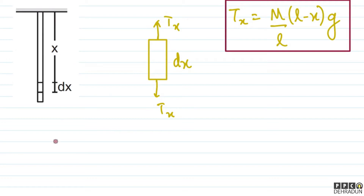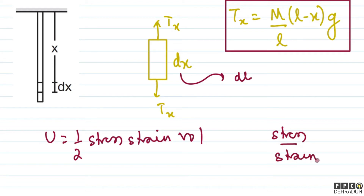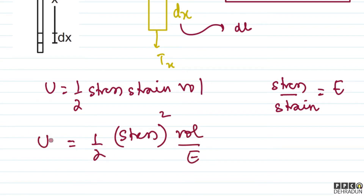As we know, the elastic potential energy stored is U = ½ × stress × strain × volume. For a small element of length dx with elongation dL, energy is stored. Also, stress / strain = Young's modulus E, so strain = stress / E. Substituting, the formula becomes: U = (stress² × volume) / (2E).